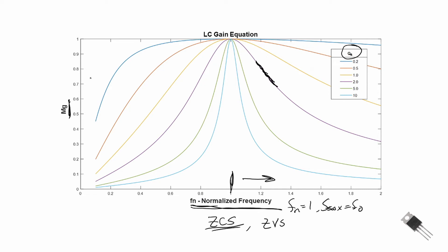Let's assume we've designed our system to have a gain of 0.8, and therefore we're going to be switching at 1.2 times our resonant frequency. As our input DC voltage VDC changes, we will have to modify our switching frequency to maintain on this load line with constant QE. We can adjust for different values of our input voltage VDC by modifying our switching frequency accordingly. That's called line regulation.